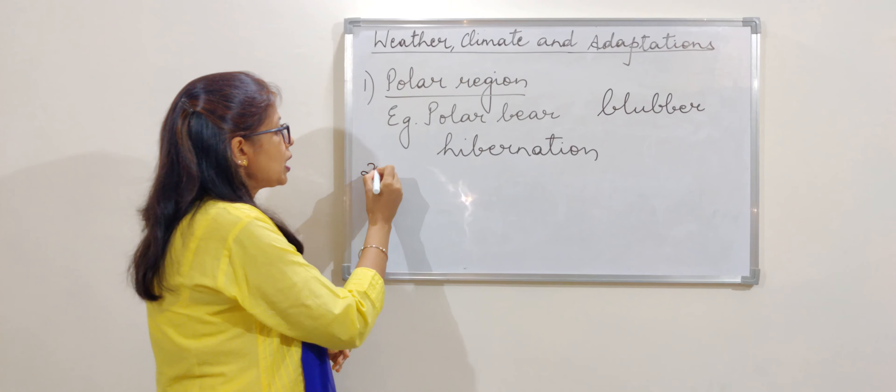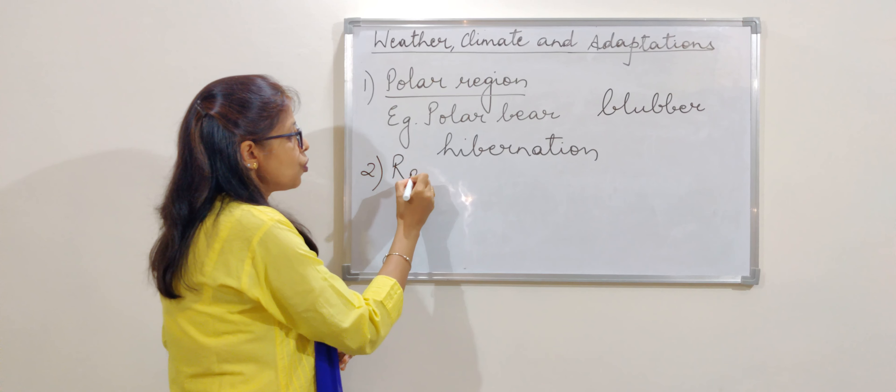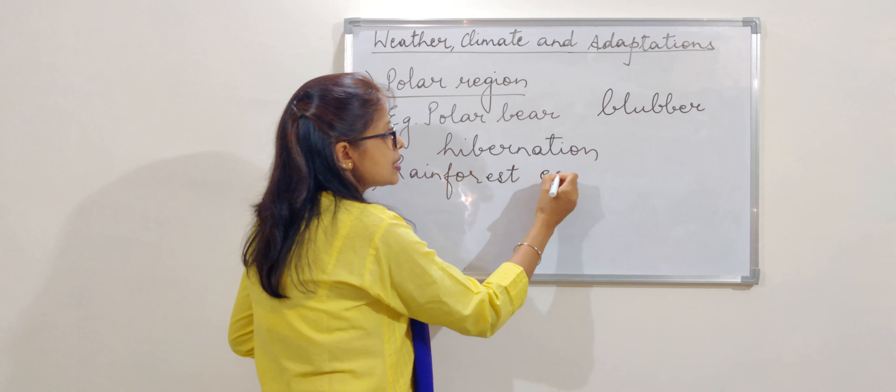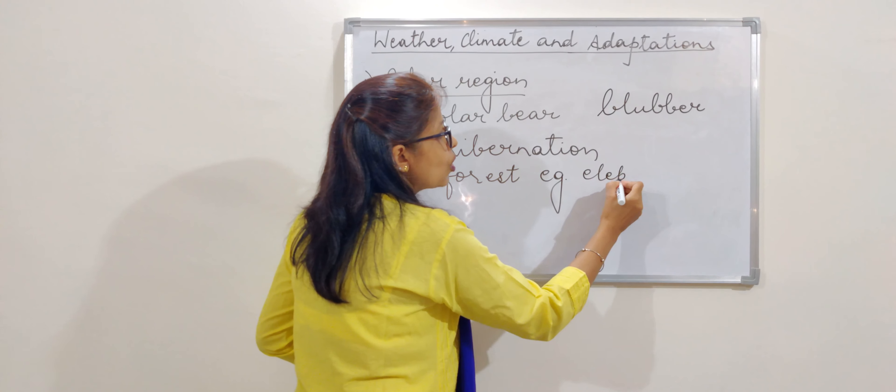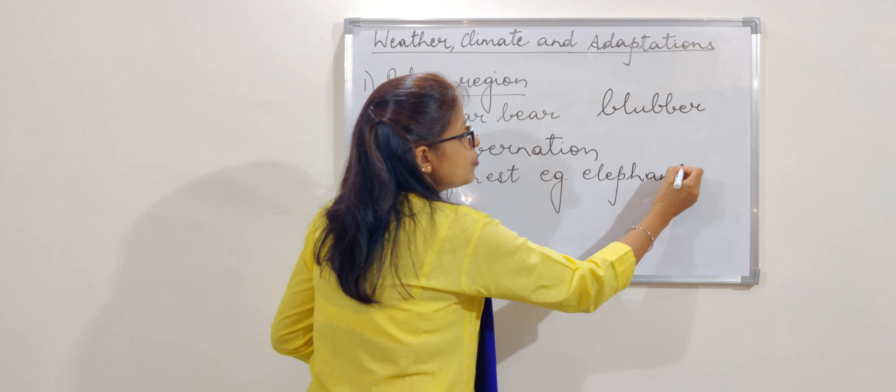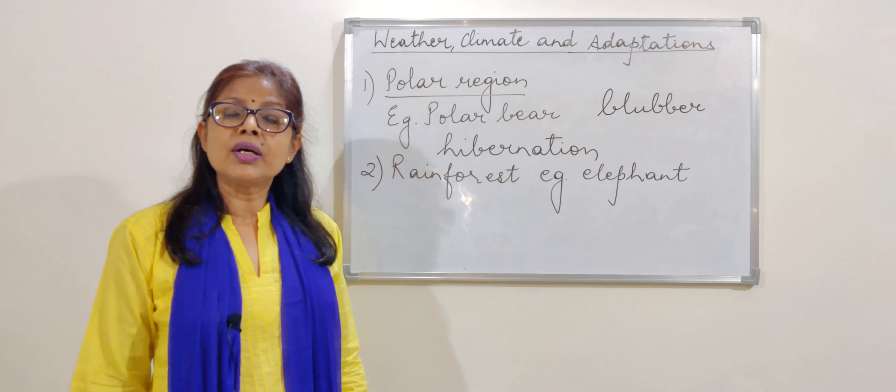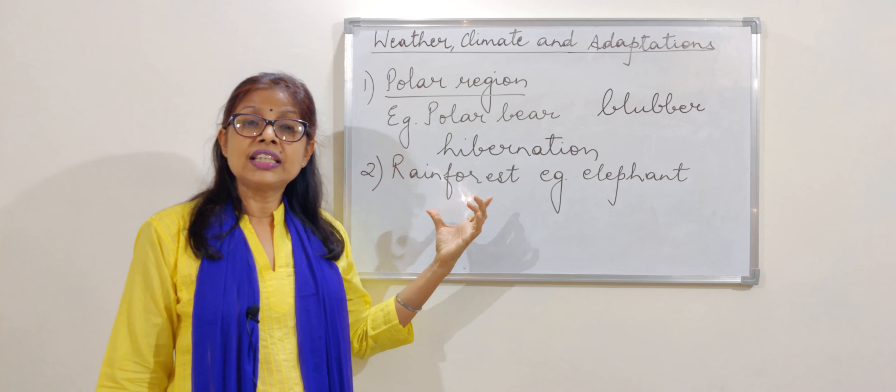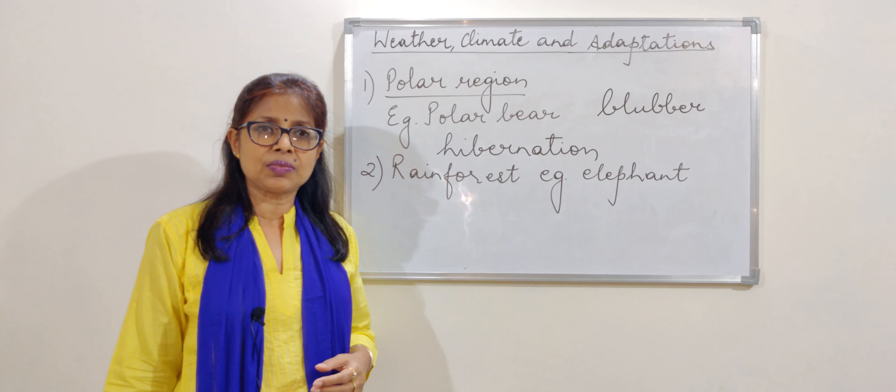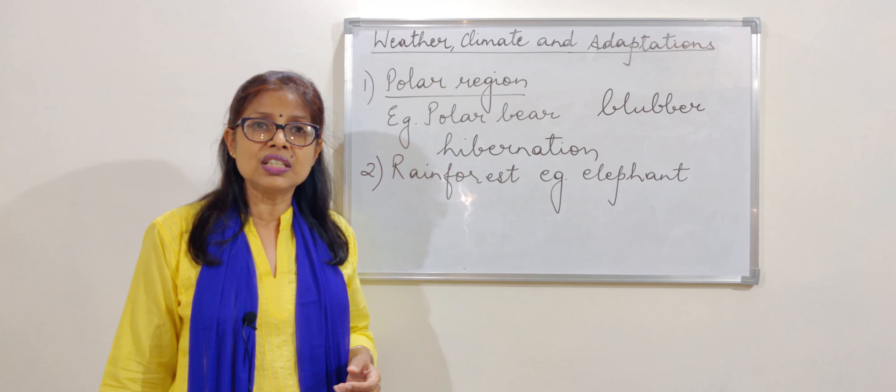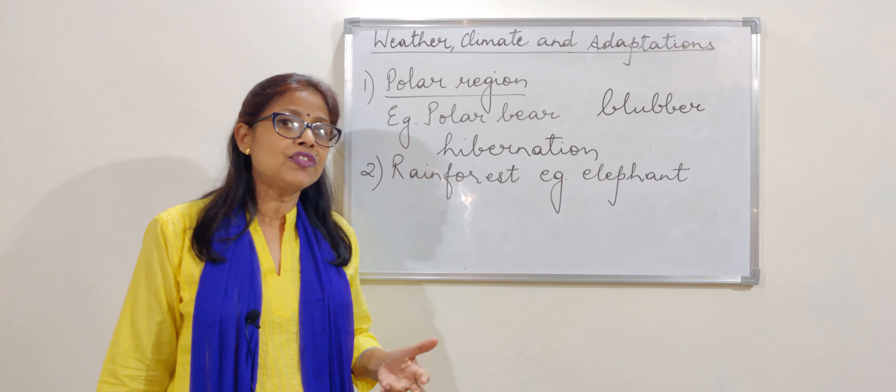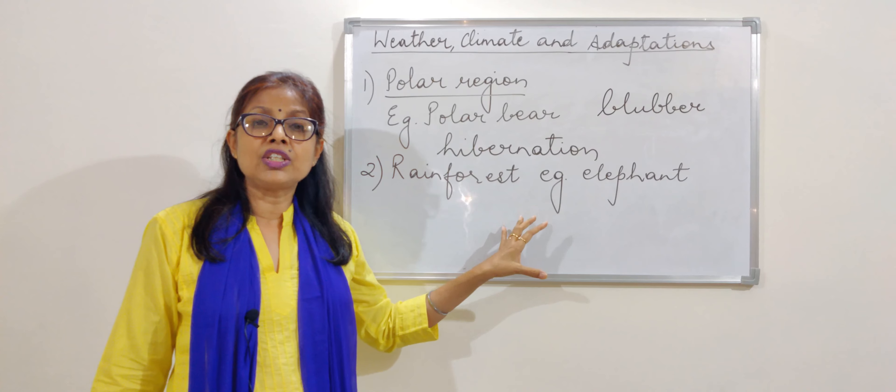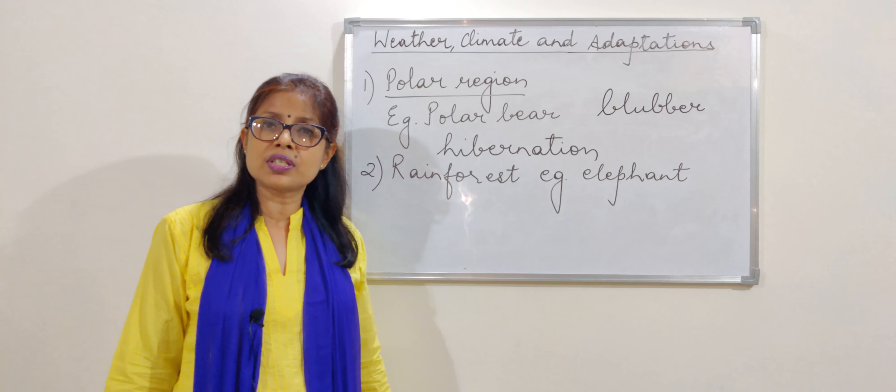The next one, we come to the rainforests. In rainforests, the best example is that of elephant or any herbivorous animal. Why herbivorous animal? Because where there is rainfall, enough rainfall, there is lot of vegetation, lots of green plants or trees and it is easy for them to take the food. So in this place, we will find most animals which are herbivorous in nature.